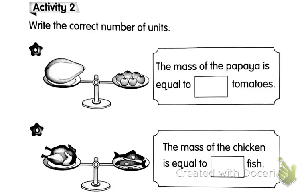Activity Number Two: write the correct number of units. These two pictures are balanced. Picture A — papayas and tomatoes: the mass of the papaya is equal to how many tomatoes? Let's count: one, two, three, four, five, six — equals six tomatoes. Picture B — chicken compared with fish: the mass of the chicken is equal to how many fish?